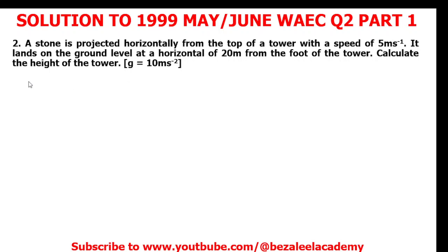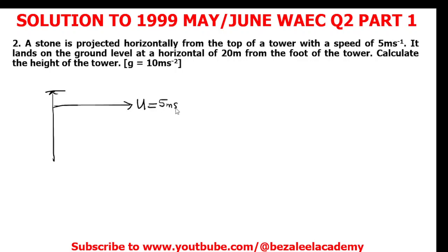Let's interpret this question. The stone is projected horizontally from the top of the tower — so let's say this is the tower. The object is projected horizontally with initial velocity u, which is 5 meters per second. From there it lands on the ground level, moving in a curved path.